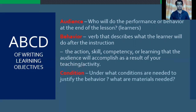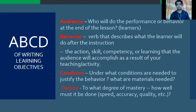Letter C is for condition — under what conditions are needed to justify the behavior, or what are the materials needed? D is for degree — to what degree of mastery? How well must it be done? Should it be done with speed, accuracy, quality? These are the ABCD of learning objectives. Letter B, or behavior, is the most important because this will be the basis in selecting the appropriate assessment.